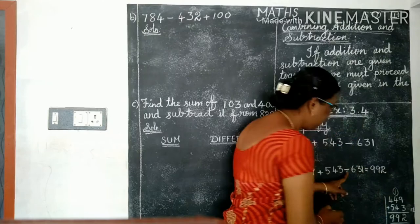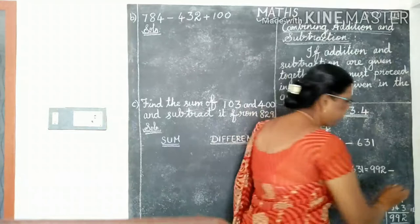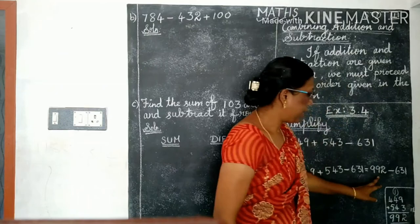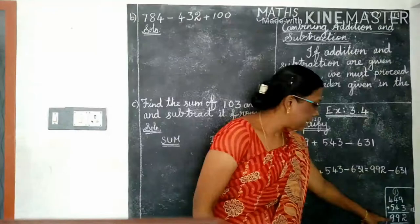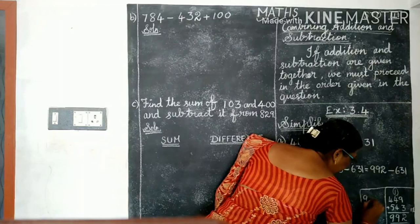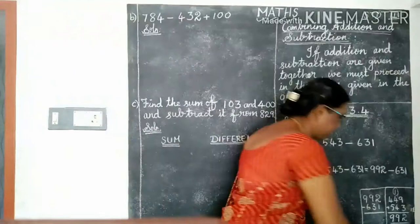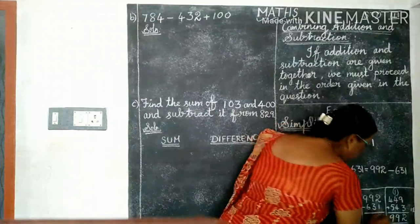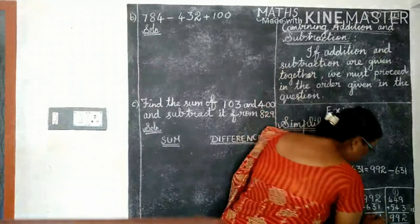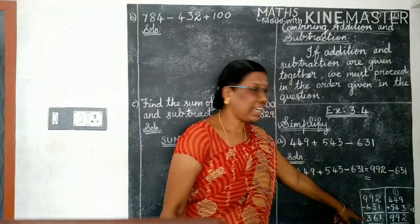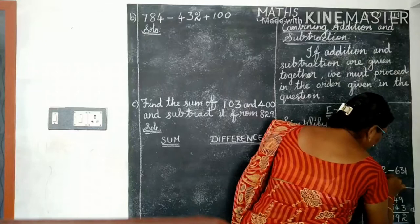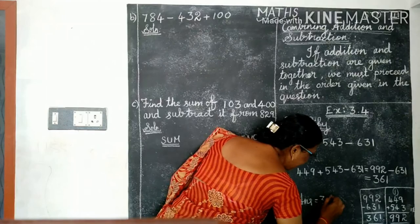So take and write 992. Then this minus sign, minus 631. Now we need to subtract. 992 minus 631. Subject. 2 minus 1 is 1. 9 minus 3 is 6. 9 minus 6 is 3. So answer we get 361. The answer is 361.